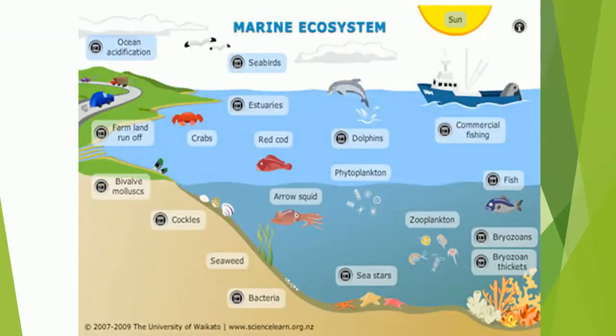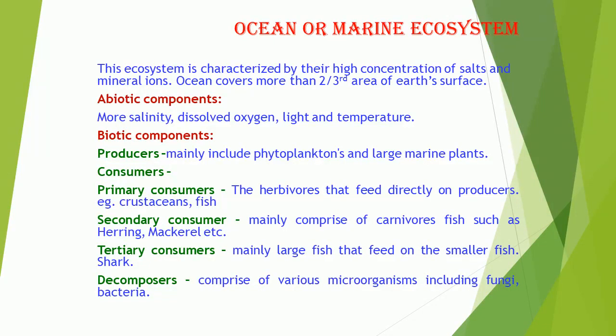Marine Ecosystem. The ocean or marine ecosystem is characterized by a high concentration of salts and mineral ions. The ocean covers more than two-thirds of the earth's surface. Abiotic Components: High salinity, dissolved oxygen, light, and temperature. Biotic Components — Producers mainly include phytoplankton and large marine plants. Primary Consumers: The herbivores that feed directly on producers, e.g., crustaceans and fish. Secondary Consumers mainly comprise carnivorous fish such as herring, mackerel, etc. Tertiary Consumers: Mainly large fish that feed on smaller fish, e.g., sharks. Decomposers comprise various microorganisms including fungi and bacteria.